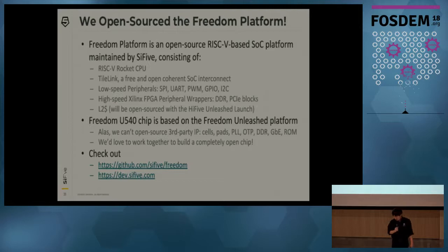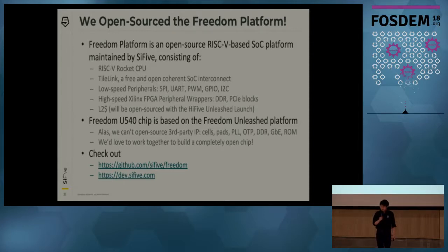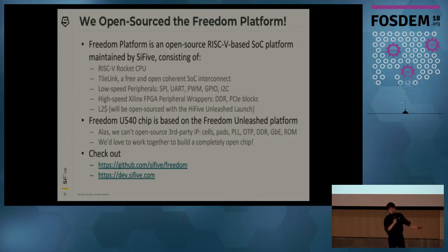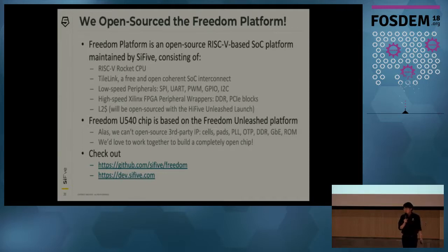The Freedom Unleashed 540 chip is based on the Freedom platform, but unfortunately there are things we can't open source — for example, IPs from third parties such as the standard cells, pads, PLLs, OTPs, mask ROMs, DDR controller PHY, and the gigabit MAC. So the FU540 is not a direct instantiation of the Freedom platform. However, we'd love to work with the community to hopefully make this a reality one day where everything on the chip is open source.